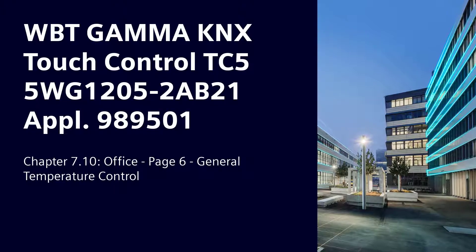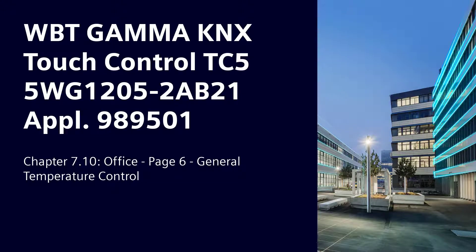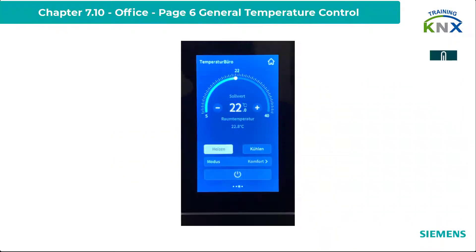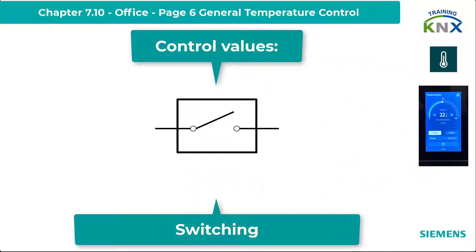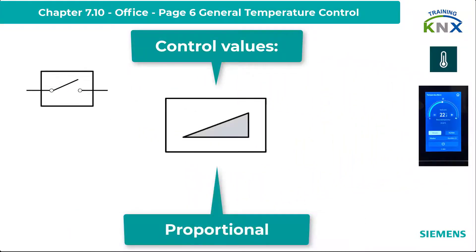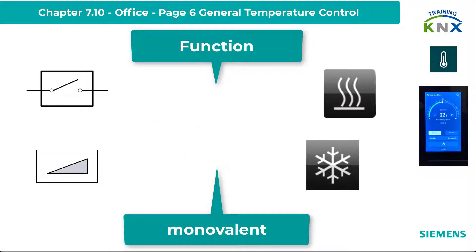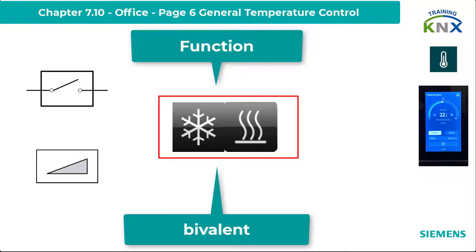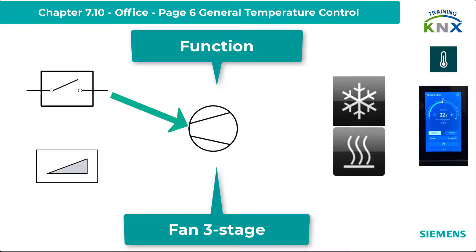Chapter 7.10: Siemens Gamma KNX Touch Control TC5 - General Temperature Control. The General Temperature Controller of the TC5 handles the usual control options: switching or proportional control variables, monovalent (only heating or only cooling) and bivalent (both options available), up to 3-stage fan control, and 1-bit or 1-byte control variables.